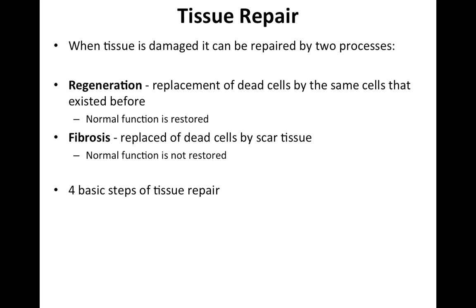When you need to repair tissue that has been damaged, there are two mechanisms. One is regeneration — replacement of the cells that died with cells that are exactly the same. Since you're replacing old cells with identical new cells, you're going to have normal function. Fibrosis involves replacing those dead cells with scar tissue, and because these are not the same cells you had before, you're not going to have normal function restored to the area.